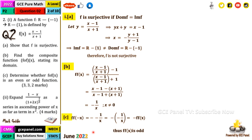Sub-question 2 reads: expand [(1 − x)/(1 + 2x)]^(1/3) as a series in ascending powers of x, as far as the term including x², worth four marks. We have many lessons on binomial expansion, and this question is just one example in this series.